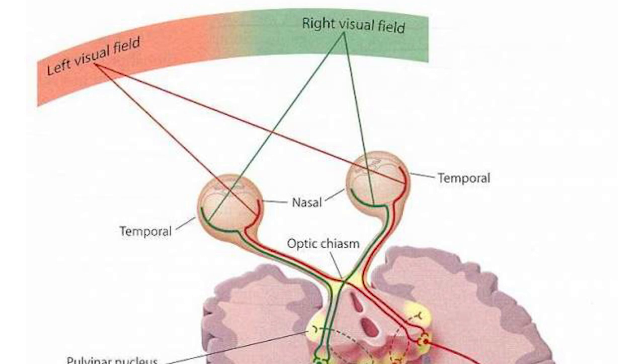So at the optic chiasm, the part of the optic nerve carrying information about the left visual field goes to the right hemisphere, and the nerve fibers that have info about the right visual field go to the left hemisphere. The fibers that stay on the same side are called ipsilateral fibers, and the fibers that cross over are called contralateral fibers.